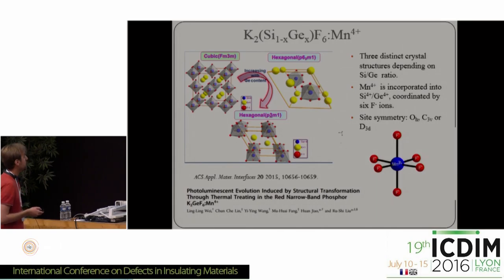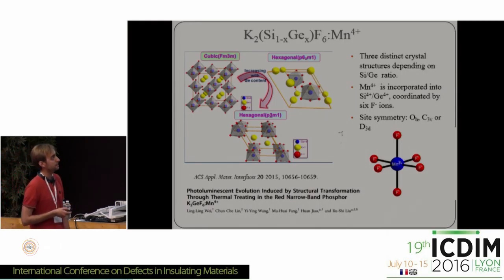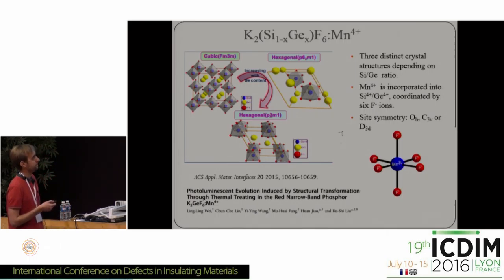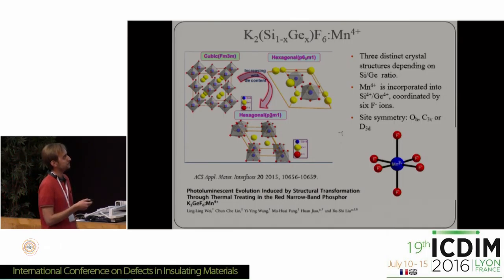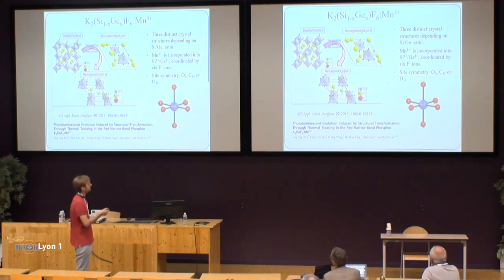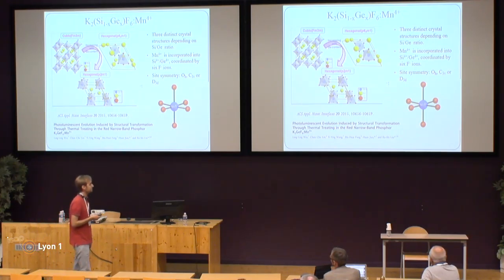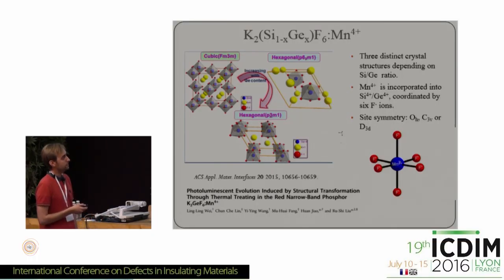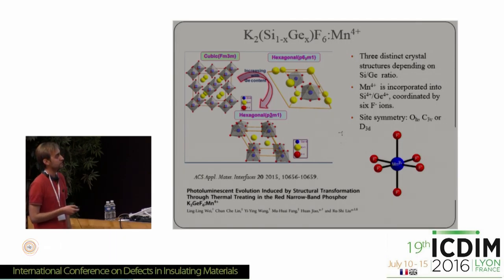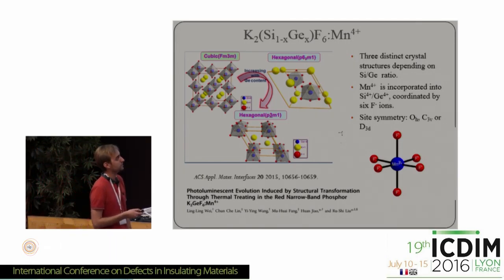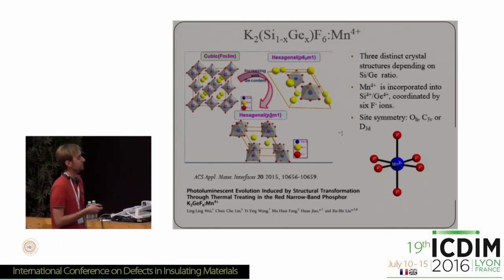The interesting thing about this group of compounds is that, depending on the silicon to germanium ratio in the composition of the crystal, we can get three distinct crystal structures. We start with cubic for pure KSF, then go through a transient hexagonal crystal structure to a different variant of hexagonal for pure KGF. The manganese 4+ is incorporated into the silicon or germanium 4+ site and is coordinated by fluorine ions, and the local symmetry of the manganese site depends on the crystal structure — either Oh for cubic, C3 symmetry, or D3d symmetry for pure KGF.